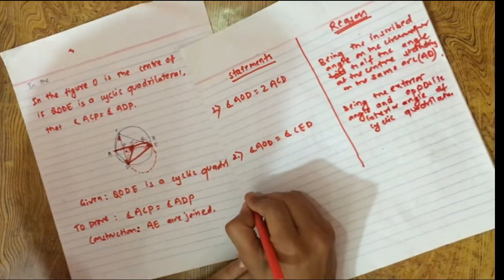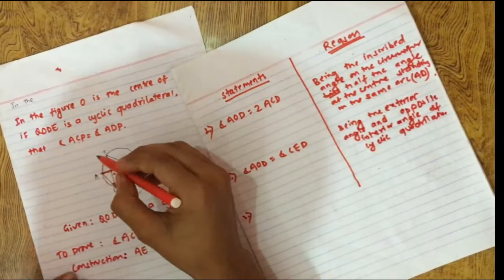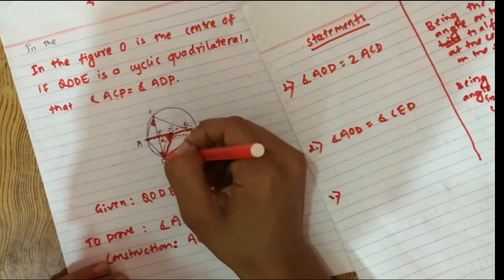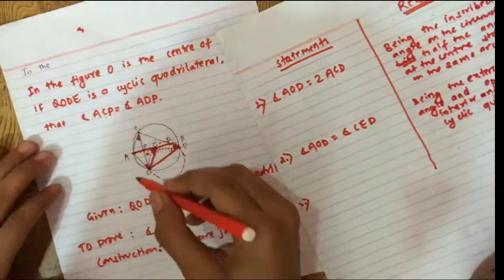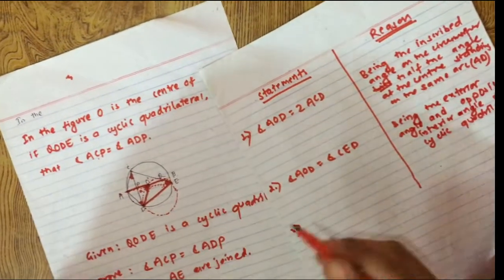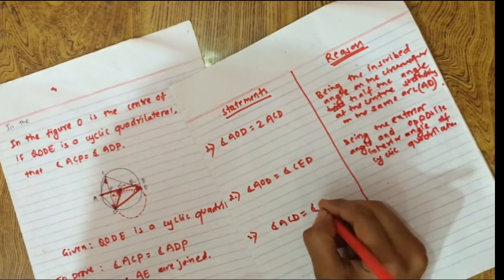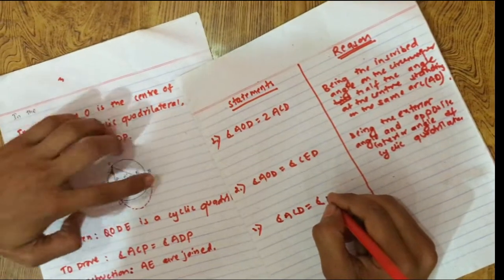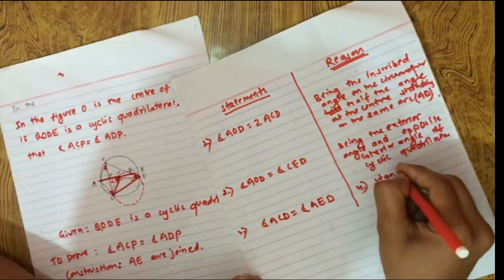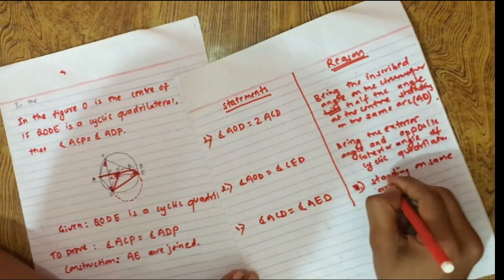Statement 3: angle ACED is equal to angle AED. They stand on the same arc ED. So angle ACED is equal to angle AED, standing on the same arc AD.